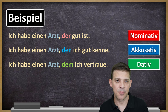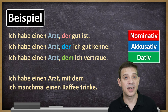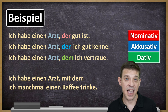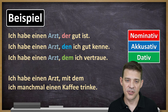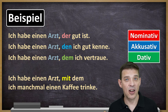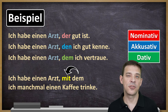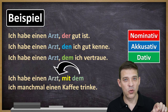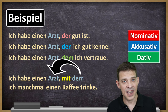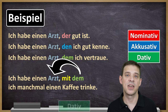Now let's make an example with a preposition. Ich habe einen Arzt, mit dem ich manchmal einen Kaffee trinke. I have a doctor with whom I sometimes go for a coffee. Here you can see we still have Arzt — masculine and singular. But we have the preposition mit, and mit is a dative preposition. Therefore, the relative pronoun is in dative case. This relative pronoun still refers to Arzt, so it's still masculine and singular, but it has to be in dative because of the preposition mit.